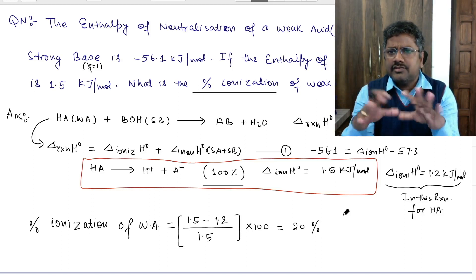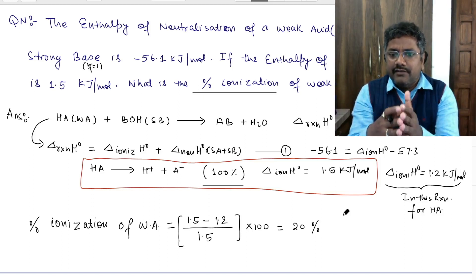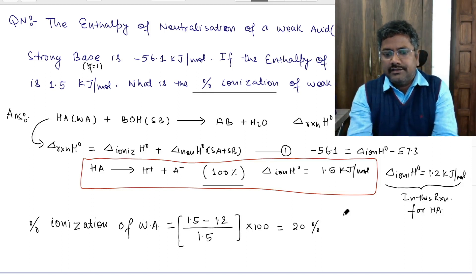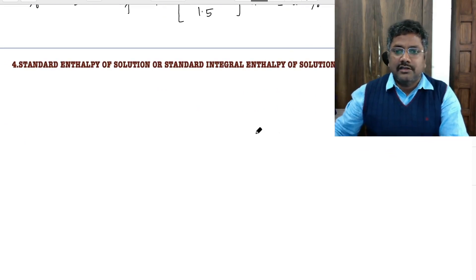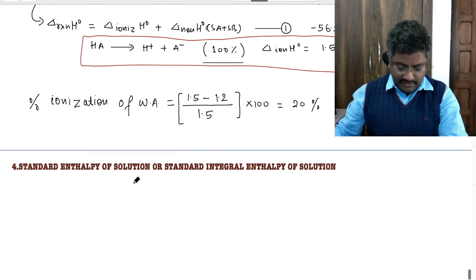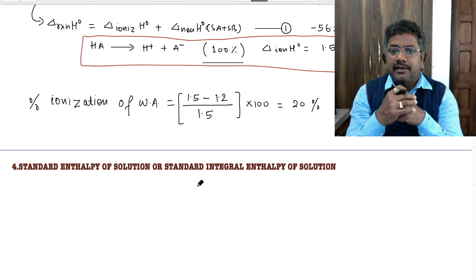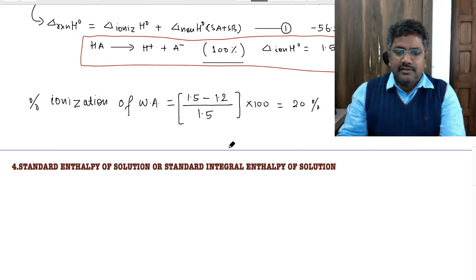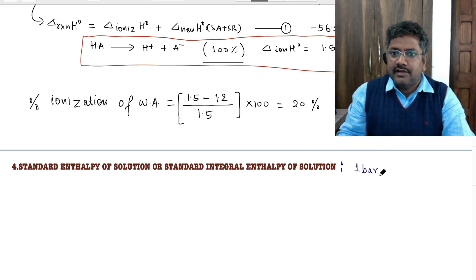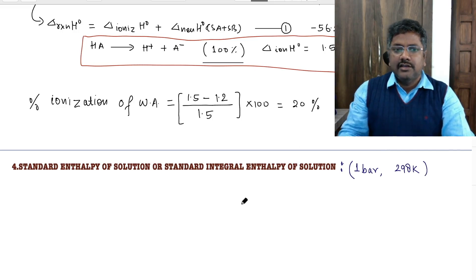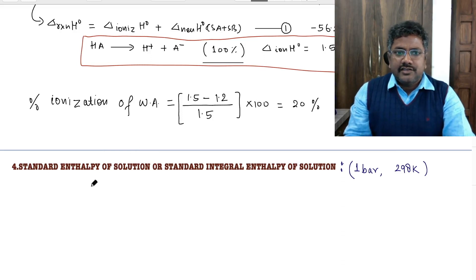Hopefully you are clear. First you have to read the question, summarize the information given, then apply your concept and equation. Now we come to the next kind of enthalpy — the standard enthalpy of solution, sometimes referred to as standard integral enthalpy of solution. Standard means at one bar pressure; if no temperature is mentioned, then 298 K.